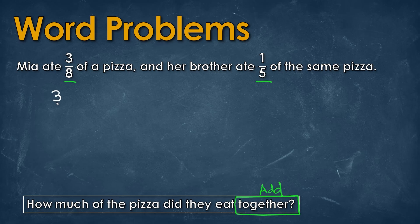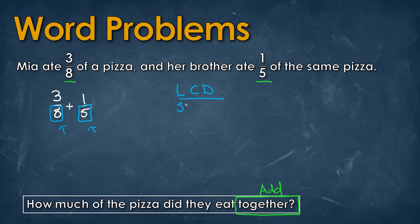So we're going to have 3 over 8 plus 1 over 5. When we have the numbers at the bottom, which we call the denominator, we have to make sure that they are the same — and they're not. We have 8 and we have 5, so we have to figure out what's called the least common denominator, meaning we need to look at the multiples of 5 and 8 and figure out when we have the same number.